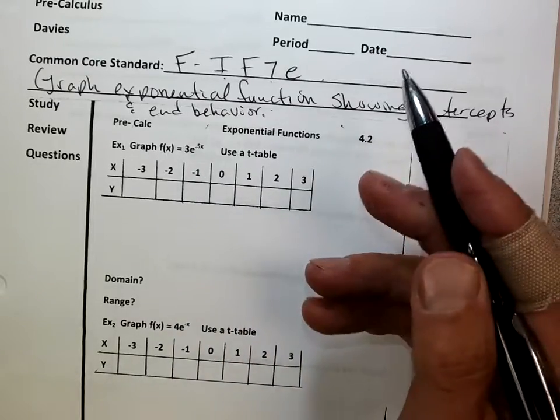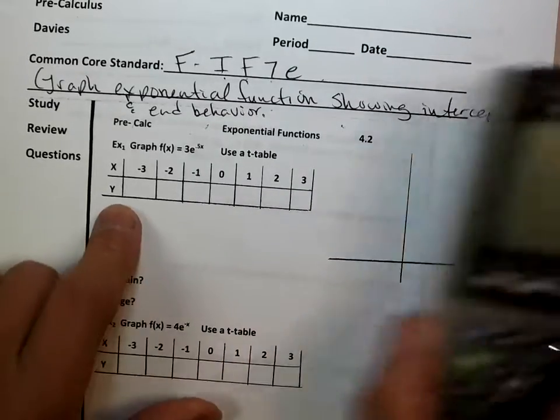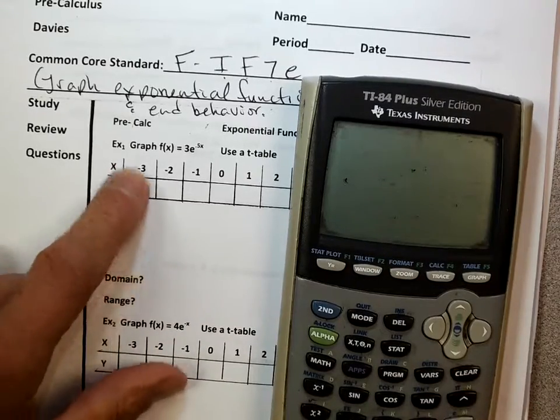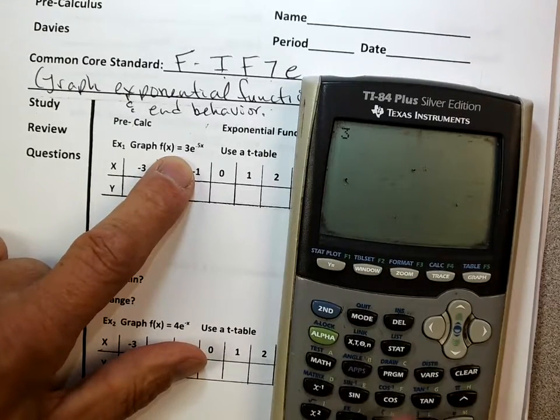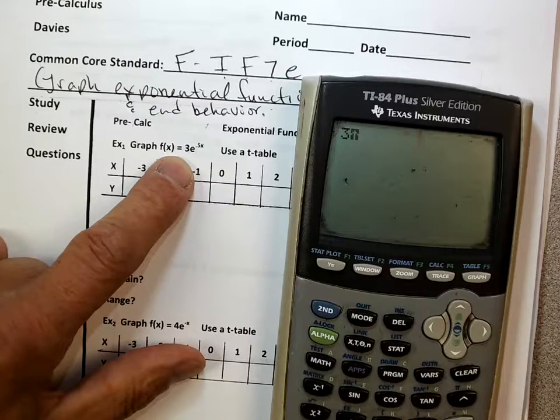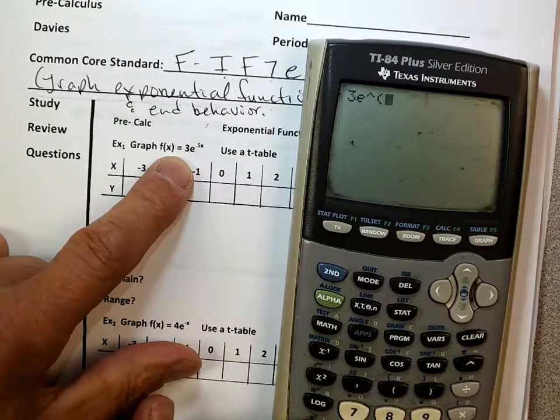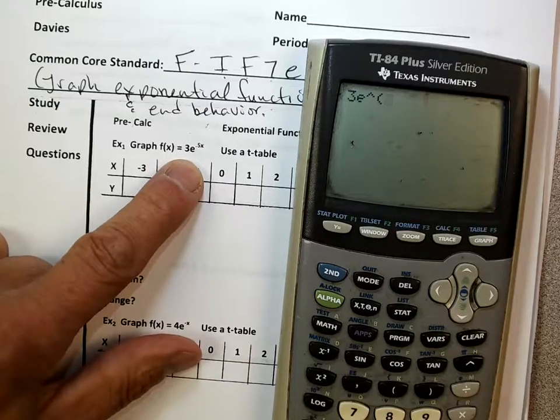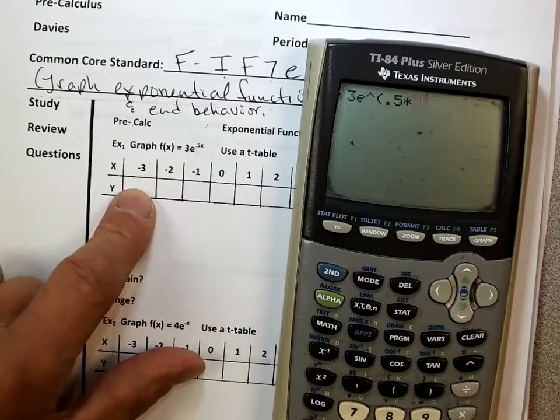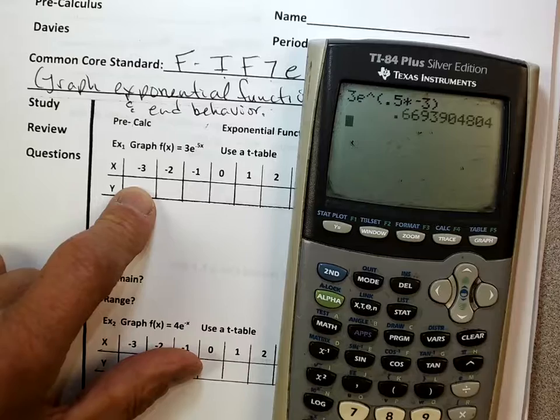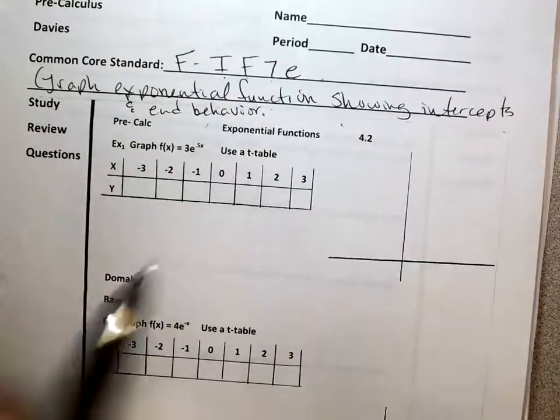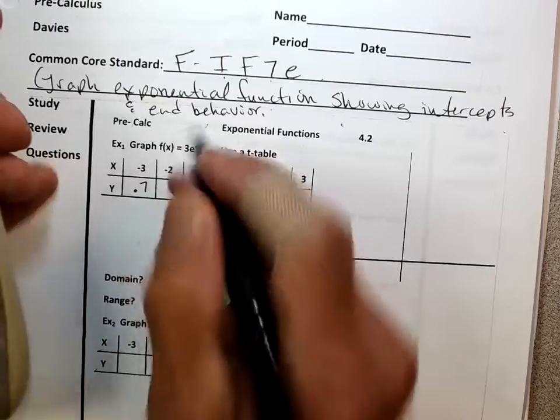So let's go ahead and first, let's get our values. I'm just going to use my calculator, clear. I'm going to go 3, and I use my E button, E to the power. Do you see where I got the E to the power? It's right by the 7 and the 4. E to the power of 0.5 times, let's plug in negative 3, and I get an answer of about 0.7.